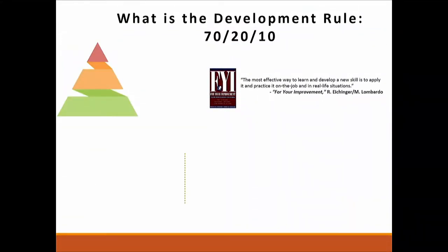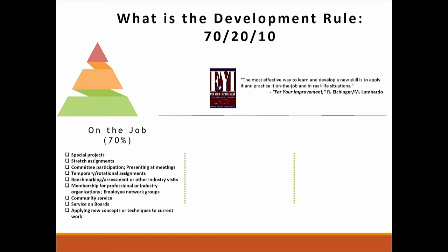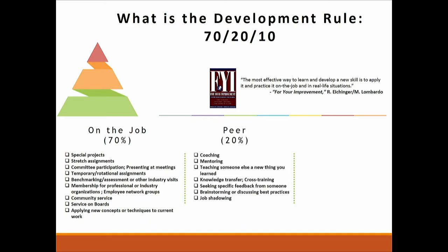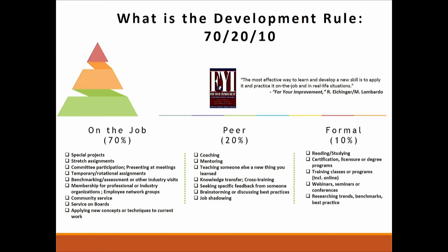One of the things I want to talk about is Lominger competencies. Professors Lombardo and Eichinger came up with a book called 'For Your Improvement' — FYI. They came up with 80-plus competencies and said that we learn best by on-the-job experiences — that's where we get most of our learning. Peer interactions account for about 20%, and formal education is about 10%.